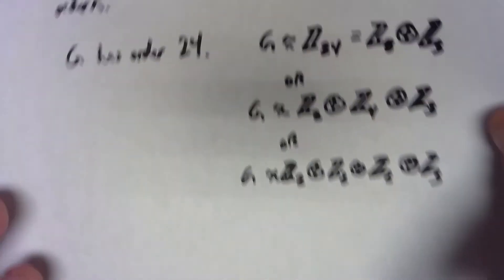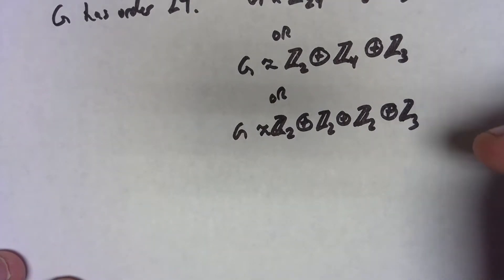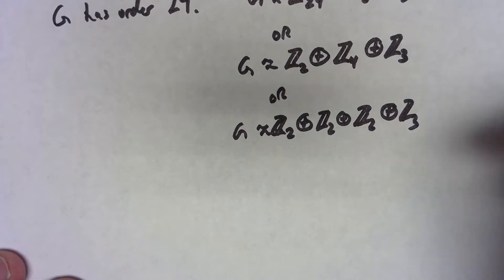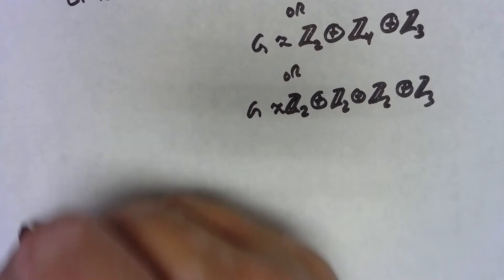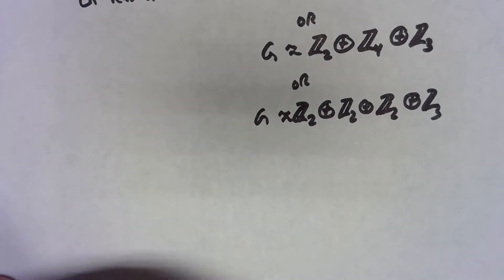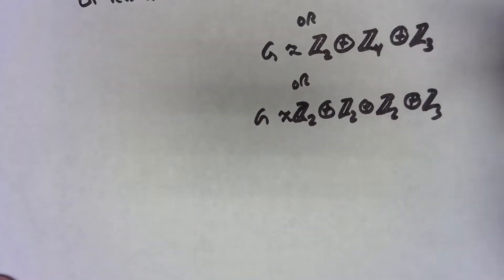So let's say, for example, we're talking about a group of order 8. We know 8 divides into 24, so we're saying that G has to have a subgroup of order 8.